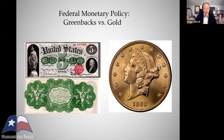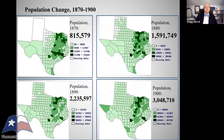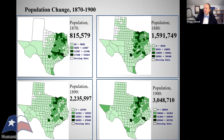And again, farmers are big borrowers. Now, let's segue to Texas. The state was experiencing explosive population growth in the last third of the 19th century, and I think sometimes this gets overlooked in our Texas history classes. But look at these four charts — they show the Texas population in 1870, 1880, 1890, and 1900, and look at the explosive growth.